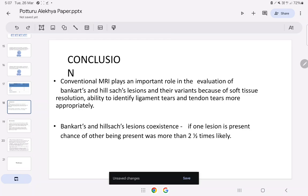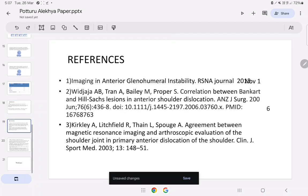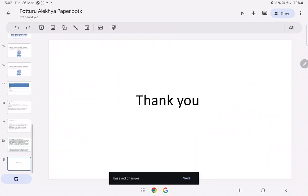Bankart and Hill-Sachs lesions coexistence: If one lesion is present, chance of the other being present was more than 2.5 times likely. These are the references. Thank you.